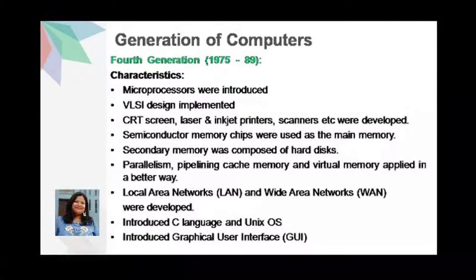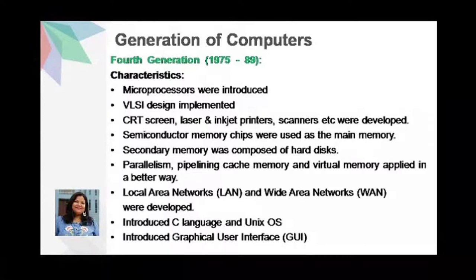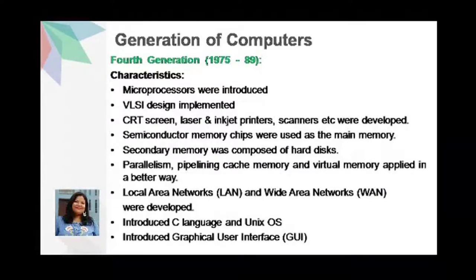CRT screens, laser and inkjet printers, and scanners were developed. Semiconductor memory chips were used as the main memory. Secondary memory was composed of hard disks, floppy disks, and magnetic tapes were also used as backup memory. Parallelism, pipelining, cache memory, and virtual memory were applied in a better way. Concepts of local area networks and wide area networks were developed. The C language and the Unix operating system were introduced, and graphical user interface (GUI) was also introduced in the fourth generation.